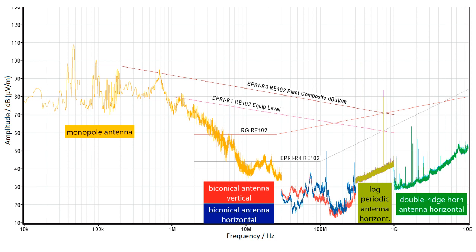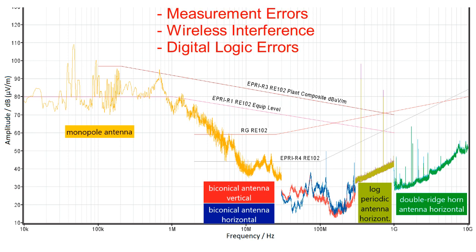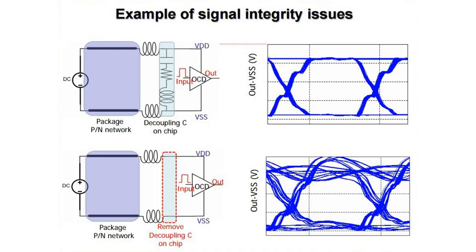Here are a few of the common failure modes: measurement errors for EUTs with analog sensing; wireless interference for EUTs with transmitters; 1 kHz audio, where the EUT often demodulates the modulation signal; and digital logic errors if your eye diagram is very small and signal integrity is poor.